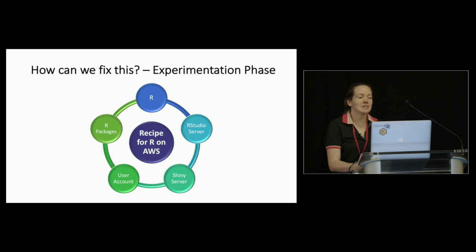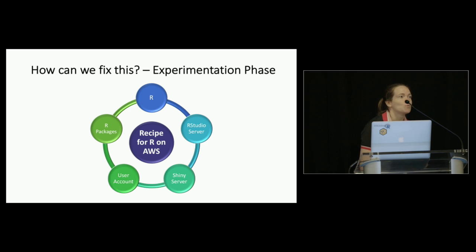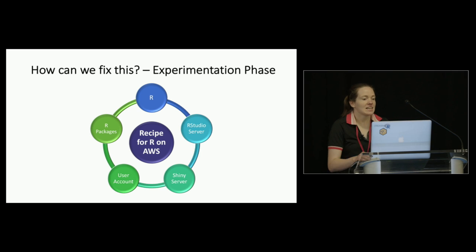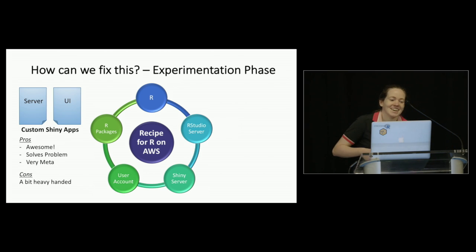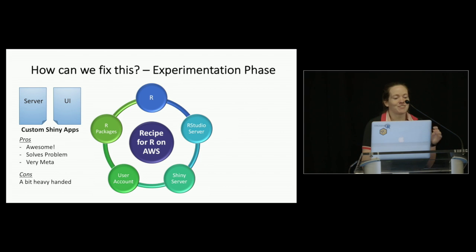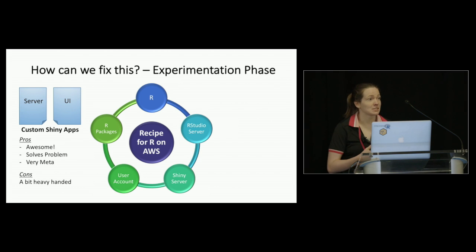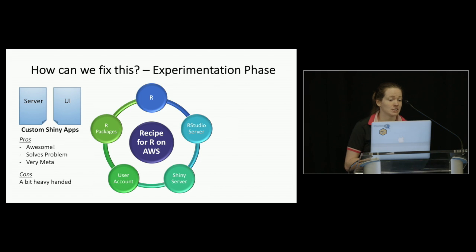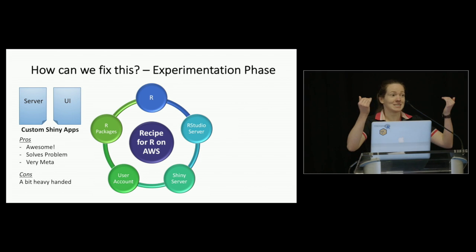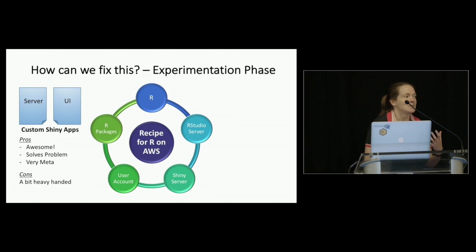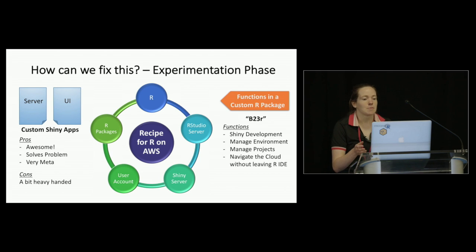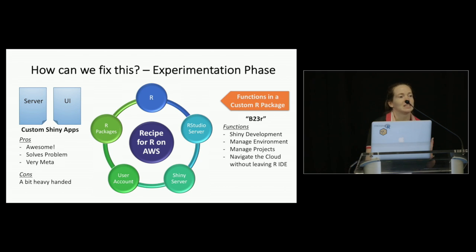I thought it would be really cool if every instance we launched came with a custom Shiny app to bridge the gap between the two servers — a Shiny app to deploy Shiny apps, which was hilariously meta. It solved my problem really well, but I realized this was going to be a heavy-handed approach, especially if I took this approach every time I needed to solve a workflow issue. Luckily, R provides a much more elegant solution: just creating a custom R package for whatever functions you need. So that's what we did. We called it B23R.